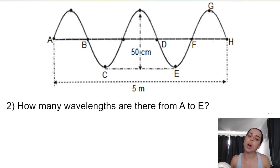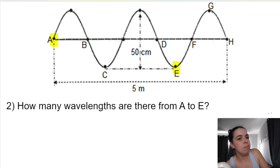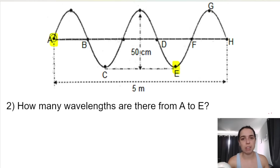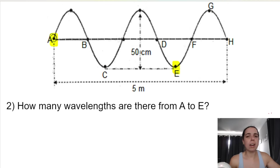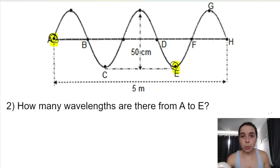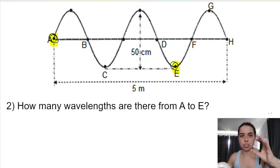Now this is a slightly more tricky one — how many wavelengths are there from A to E? You can see immediately that A is at the equilibrium position and E is on a trough. So there won't be a full number of wavelengths — it could be one point something, one and a half, one and a quarter, or one and three quarters. It won't be a full number of wavelengths because we start at equilibrium and end on a trough. The best way to do this is to count the number of full waves first, then count the halves or quarters.